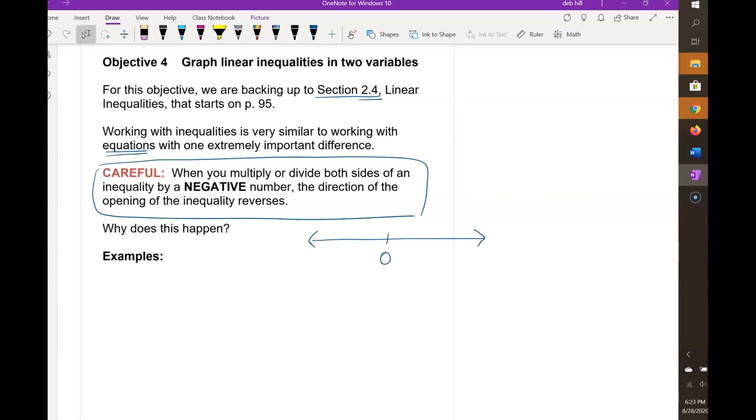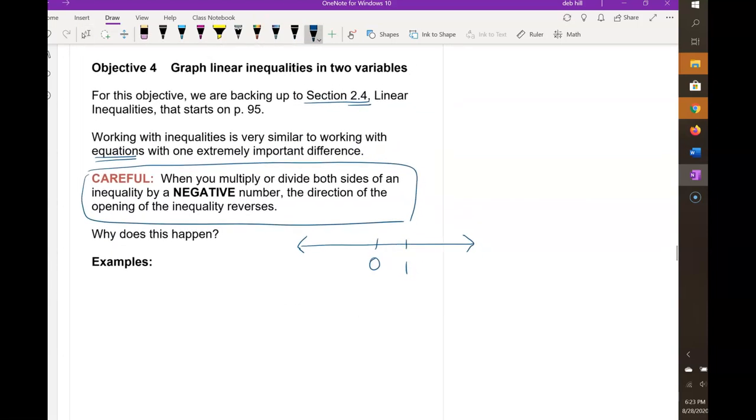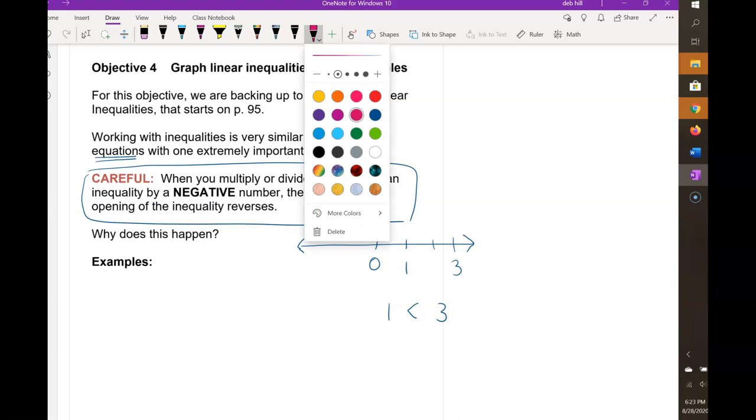Here's 0, and suppose I have the numbers 1 and 3. Well, clearly 1 is less than 3. Because we're on the right hand side of the number line where numbers are larger than 0, the farther you are to the right, the larger the number is. But suppose I multiply both sides of this inequality by negative 2.